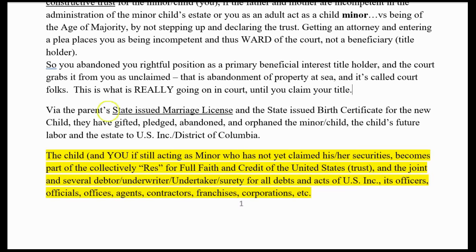Via the parents' state-issued marriage license and state-issued birth certificate for a new child, they have gifted, pledged, abandoned, and orphaned that minor child, leaving them adrift on the sea of commerce. The child's future labor and estate belongs to the United States because they're taking care of him until he steps up and takes control. Until you do this, you can't go into court and do this — you'll just be treated as an orphaned minor child who is a ward of the state.